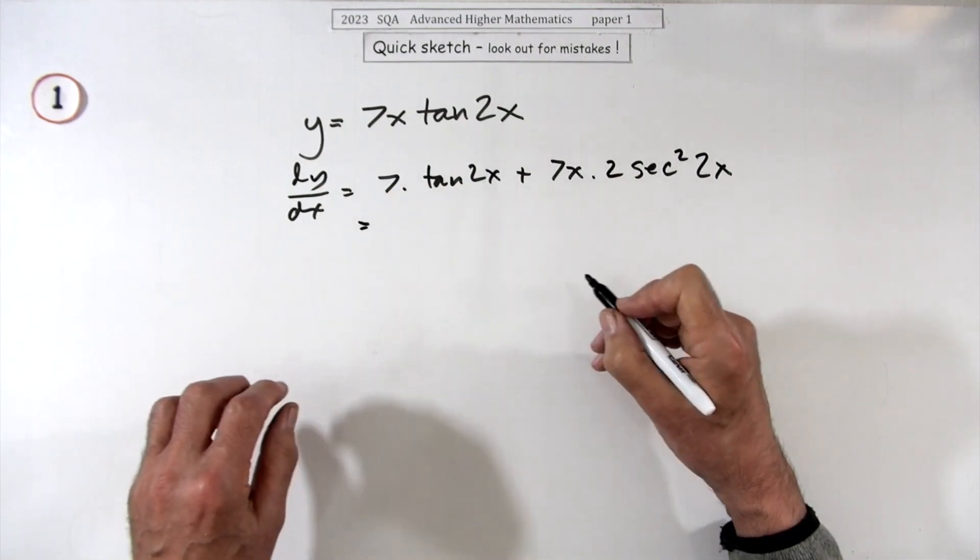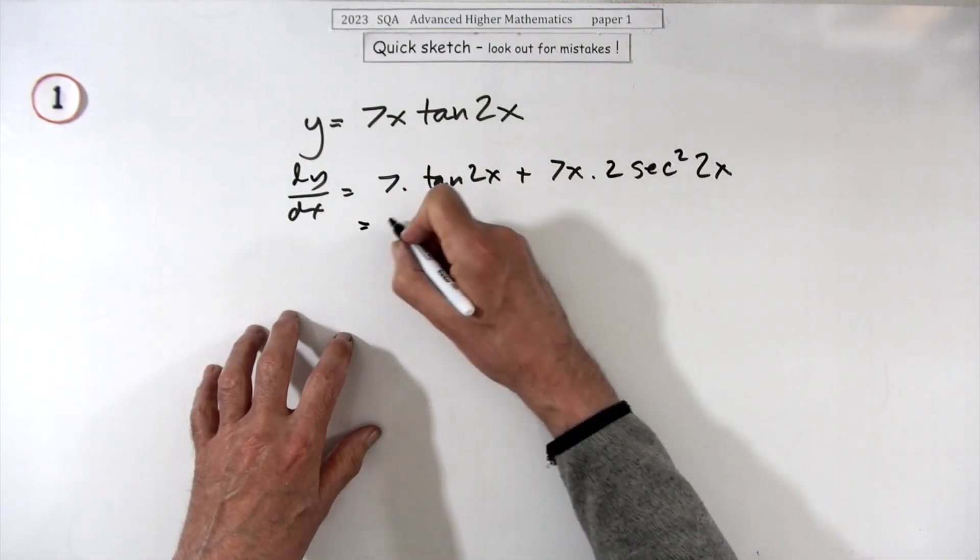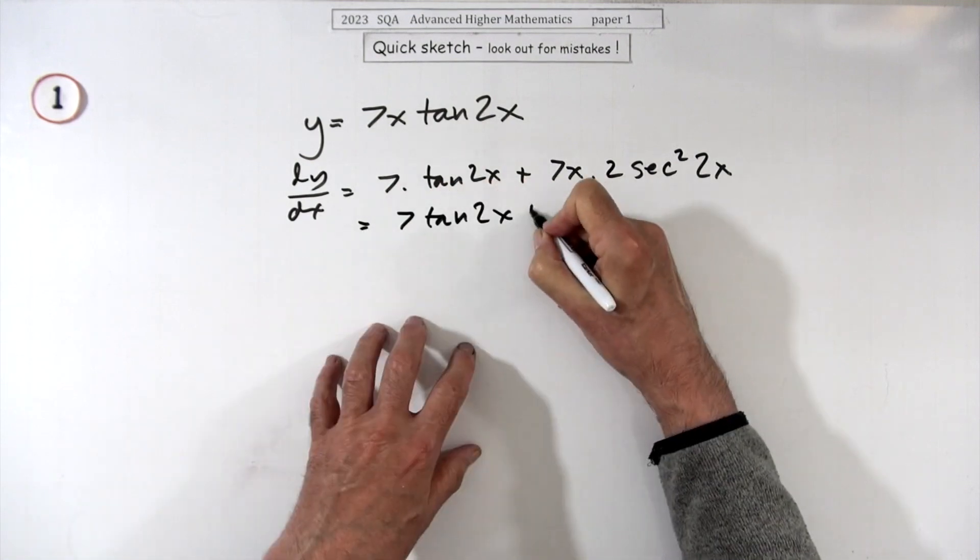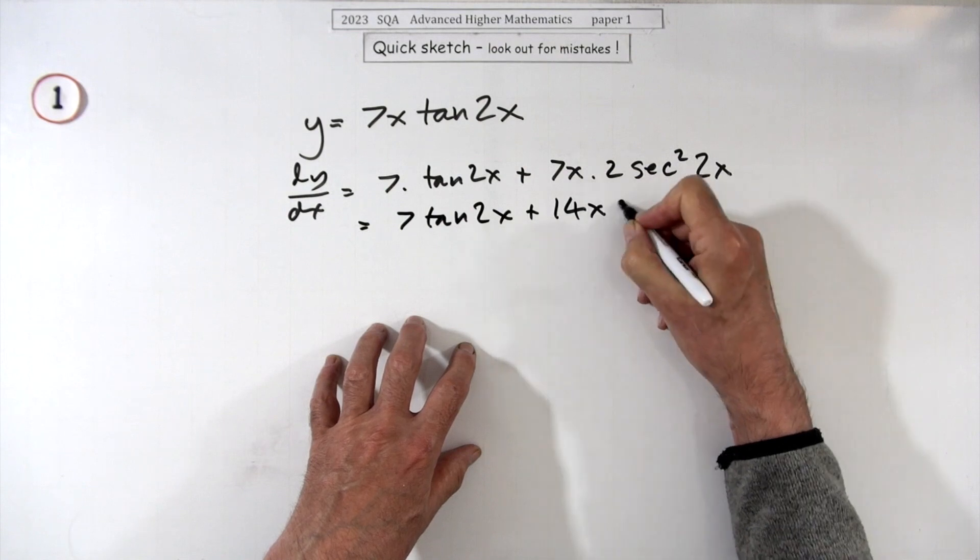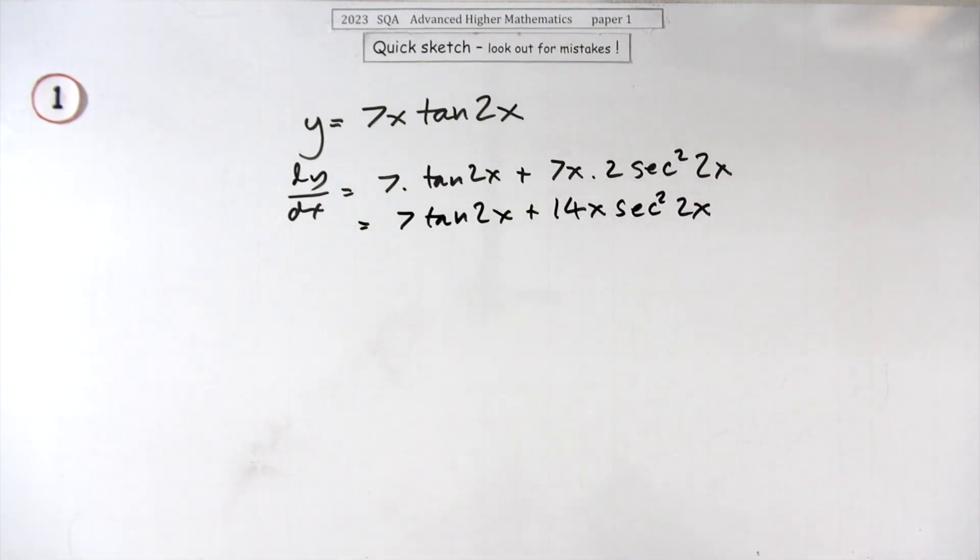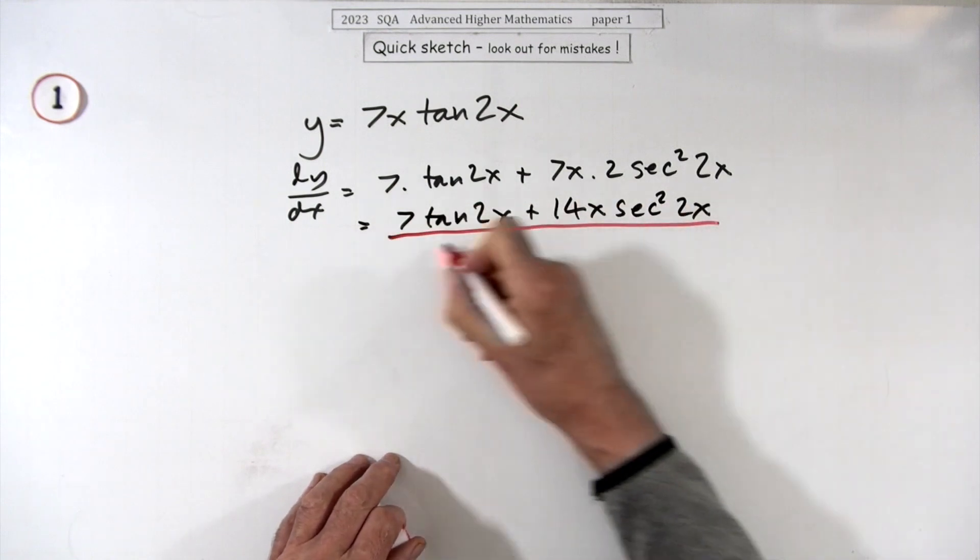Apart from doing 2 times 7, I'm not going to bother taking out the common factor of 7. So: 7tan(2x) plus 14x·sec²(2x). Not a lot to it.